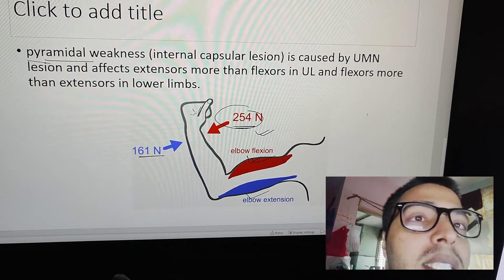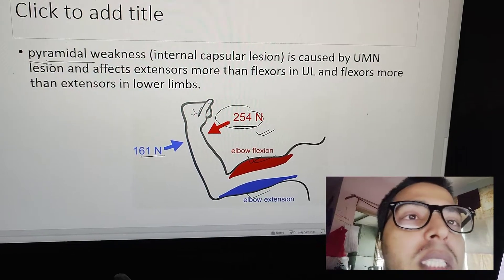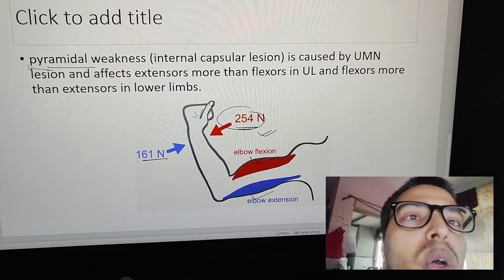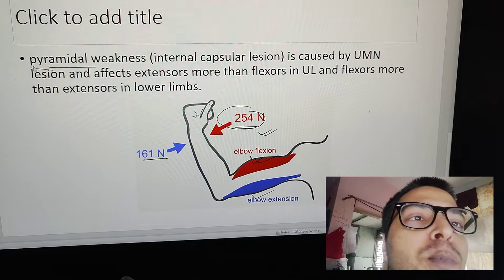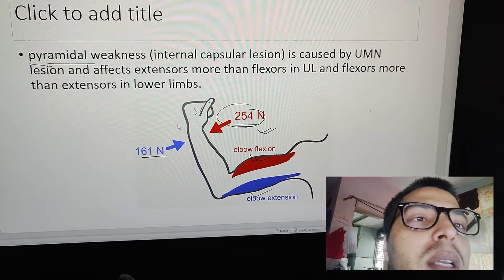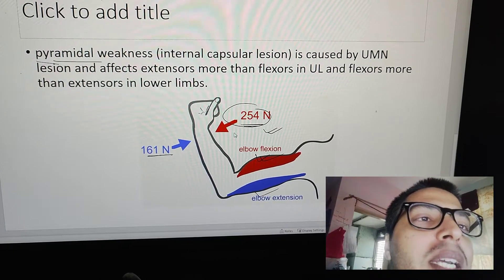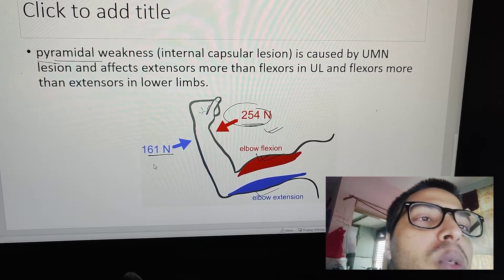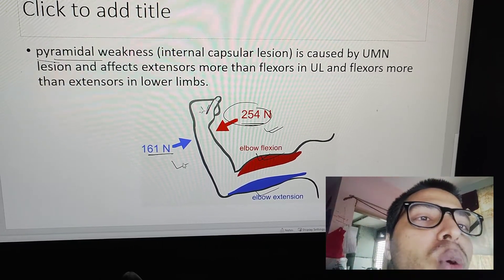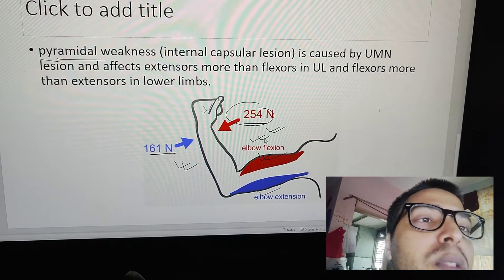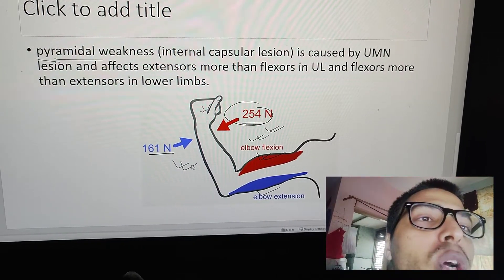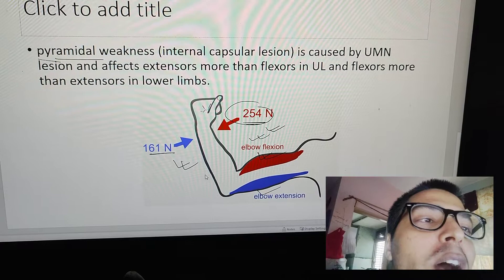In pyramidal weakness, meaning lesions of the internal capsule, you can observe that in upper limbs, flexor groups of muscles are less affected compared to extensors. There is more extensor weakness compared to flexors because flexors are already stronger. The less powerful group of muscles are more affected.